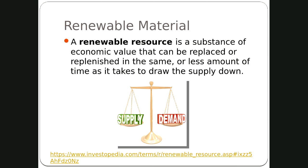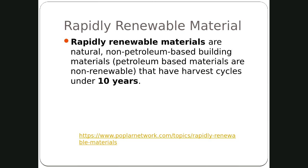A renewable resource is something that can be replenished in the same or less amount of time. Bamboo is one of the best renewable building materials — it's rapidly growing, strong, and can be replaced very quickly. Rapidly renewable materials have harvest cycles under 10 years. Petroleum is not a renewable resource — when we dig that last gallon of oil out of the earth, that's it.